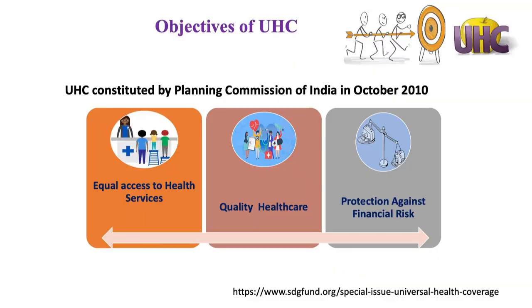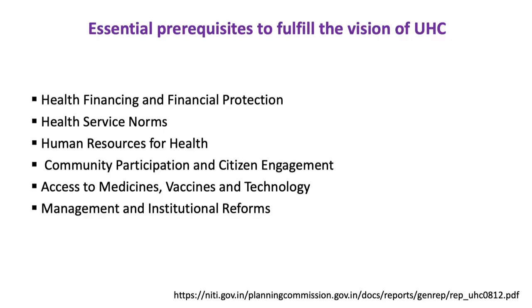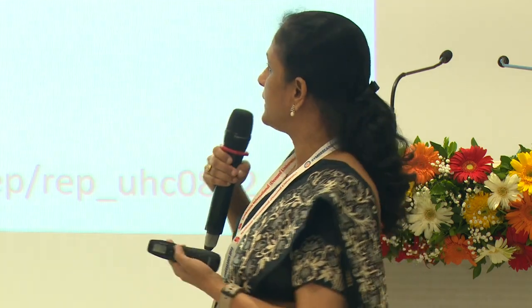There are three main dimensions: equal access to health services, quality health care, and protecting from financial risk. The main prerequisites are health financing and health protection — basically insurance, reducing out-of-pocket expenditure to protect from catastrophic health expenditure. Human resources for health are needed to deliver services. Community participation and citizen engagement are important, as are access to medicines, vaccines, technology, and management and institutional reforms.